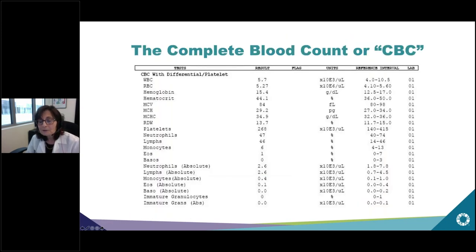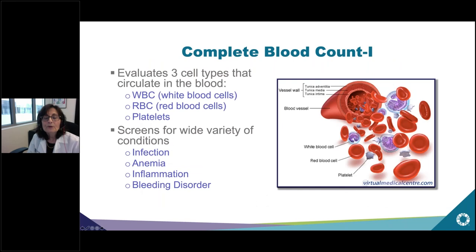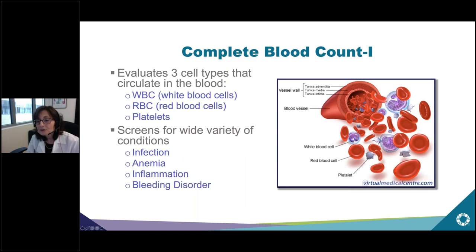Now I want to move on to the complete blood count, or CBC. The CBC evaluates three cell types that circulate in the blood: white cells, red cells, and platelets. The CBC really screens for a wide variety of conditions including infection, anemia, inflammation, and bleeding disorders.